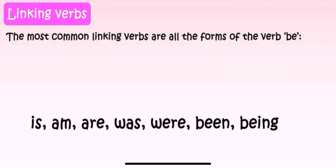Next, the most common linking verbs are all the forms of the verb be. The most common linking verbs. What are they? Is, am, are, was, were, been, being. These all verbs are formed from be. That means, be is the mother and this seven children are of be. They are formed from be. These are the common linking verbs. You can even call these as helping verbs.